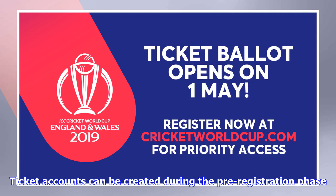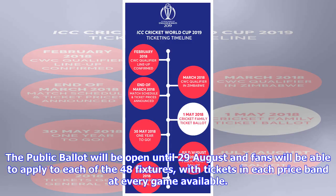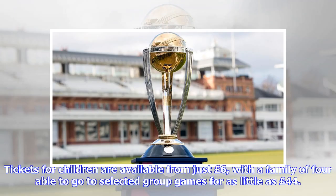Ticket accounts can be created during the pre-registration phase. The public ballot will be open until the 29th of August, and fans will be able to apply to each of the 48 fixtures, with tickets in each price band at every game available. Tickets for children are available from just £6, with a family of four able to go to selected group games for as little as £44.